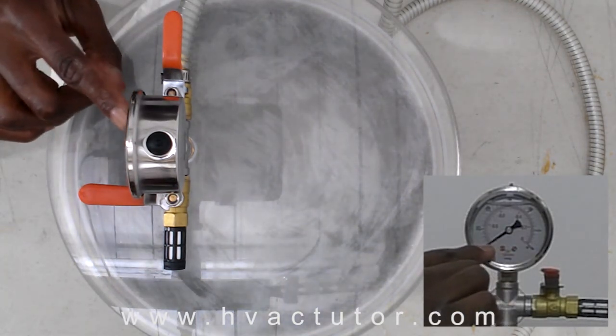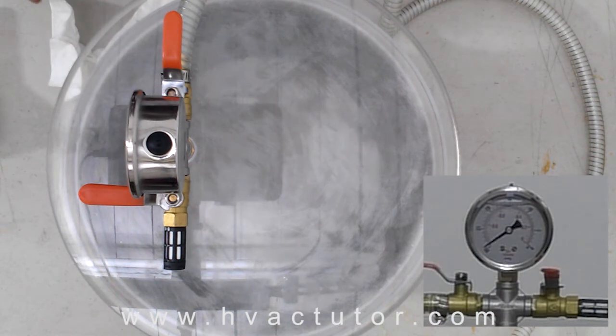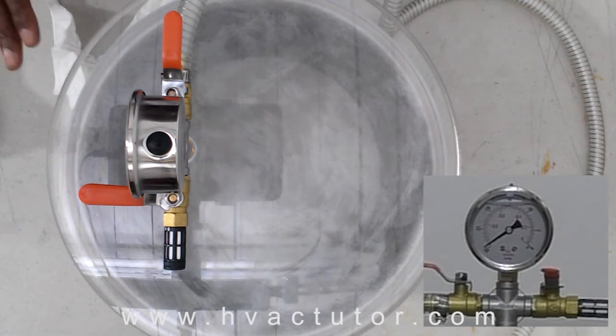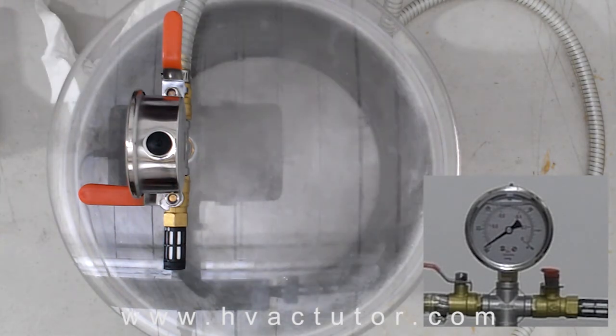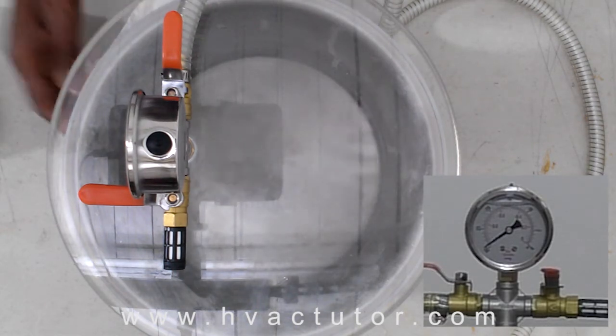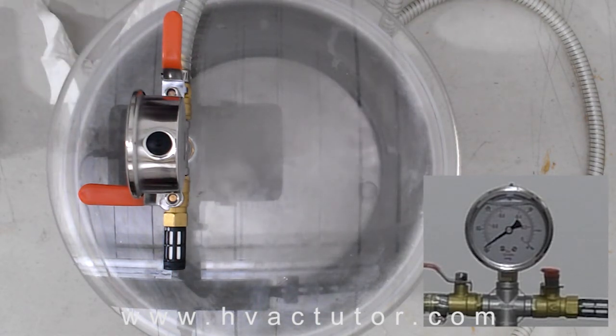We dropped the pressure below atmospheric pressure. So we're currently holding at 29 inches vacuum, which lowered the boiling point of the water inside of the vessel. The heat inside of the water is actually being used to boil a small percentage of the water.